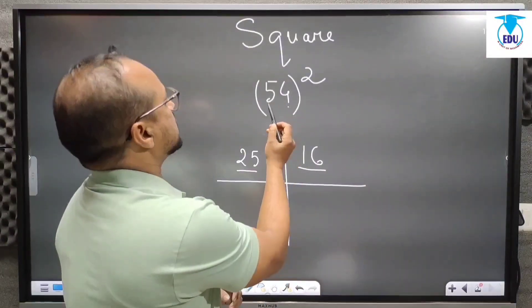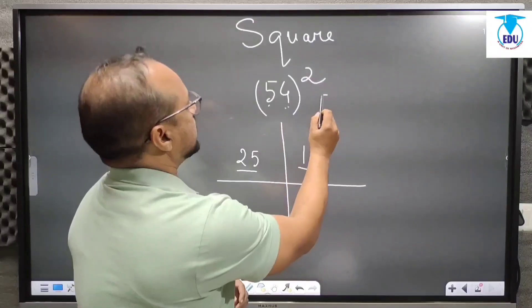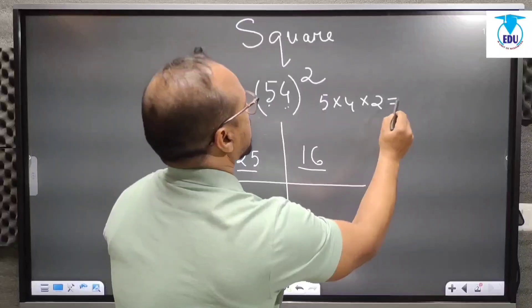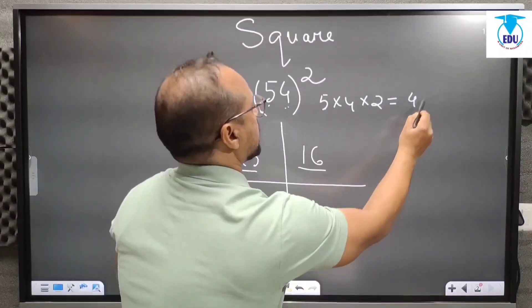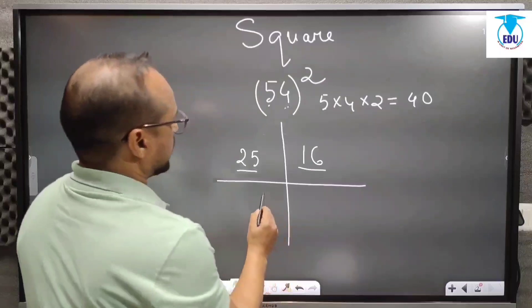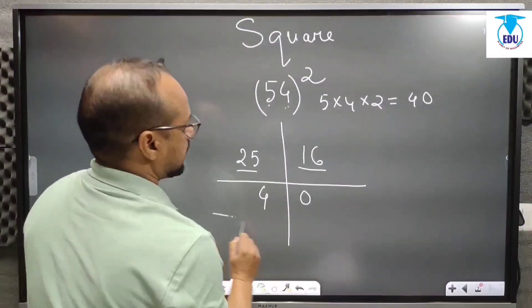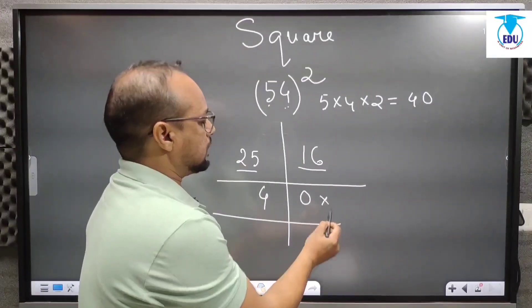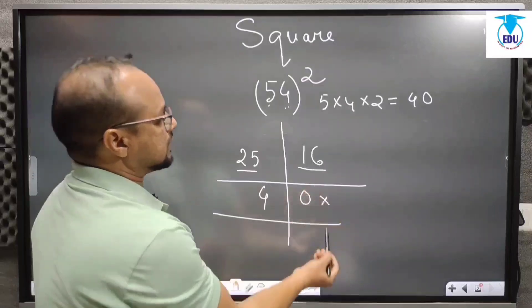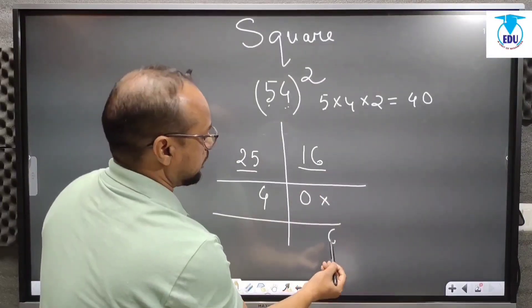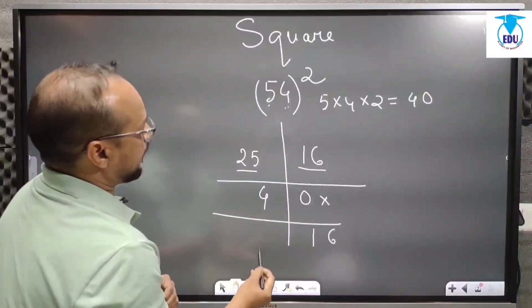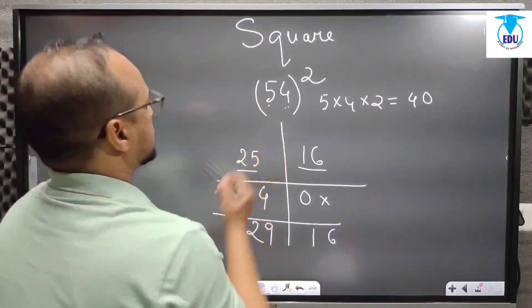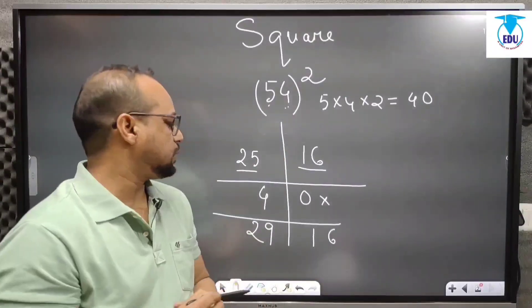Next, there are three numbers here: 5, 4, and 2. We will multiply these three numbers — 5 into 4 into 2. How much will we get? That is 40. This 40 we will put in this way. Always remember, below this 6 no numbers will come. Then we just add the columns: 6 is here, 1 plus 0 gives 1, 5 plus 4 gives 9, and 2 comes here. So the square of 54 is 2916.